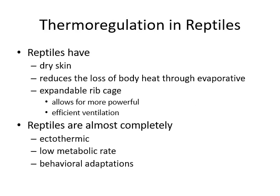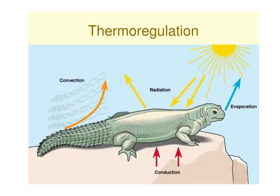Thermoregulation in reptiles: reptiles have dry skin with scales that reduce heat loss through evaporative cooling. They have an expandable ribcage that allows them to insert more air, enabling more powerful and efficient ventilation. Reptiles are almost completely ectothermic with a low metabolic rate, just like amphibians, and use behavioral thermoregulation similarly. A reptile lying on a substrate gains radiation from the sun and heat from the substrate, then dissipates heat into the air through convection and evaporative loss.